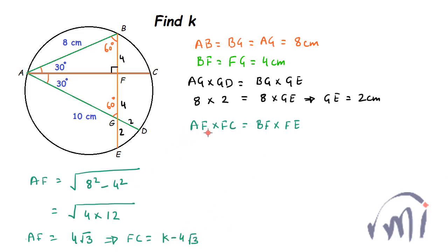And now, let me substitute all these values over here, so AF is 4 root of 3 multiplied by FC, FC is K minus 4 root of 3, this is equal to BF which is 4 multiplied by FE and FE is equal to 4 plus 2, that is 6.